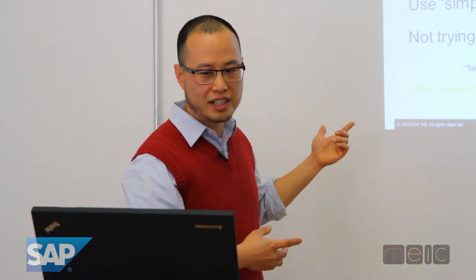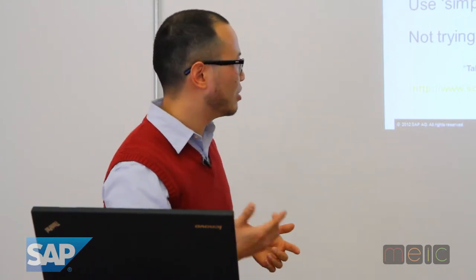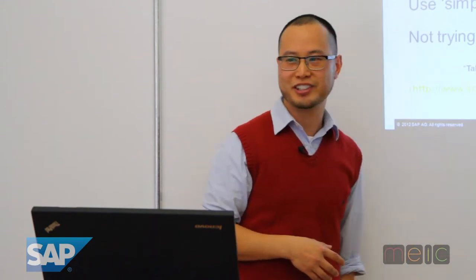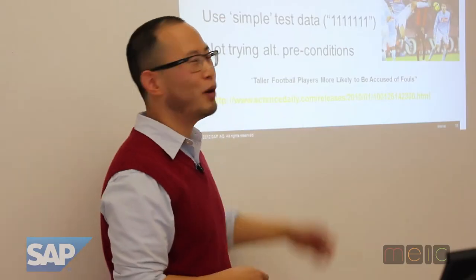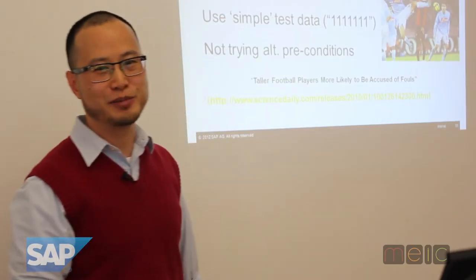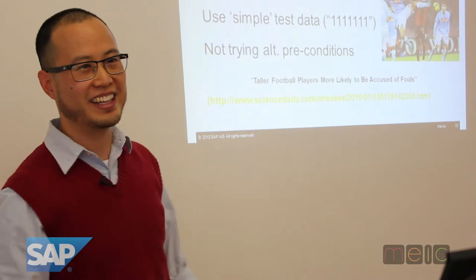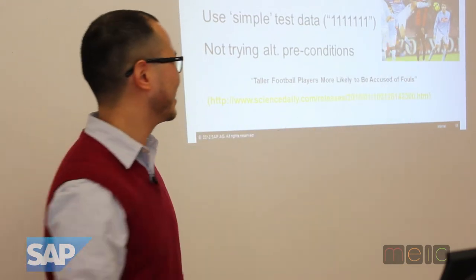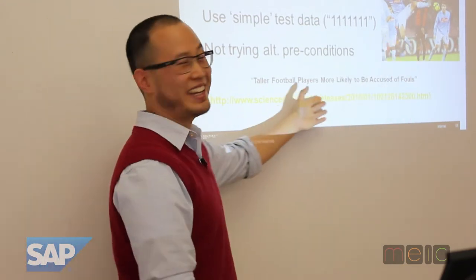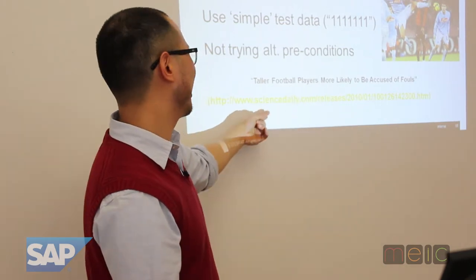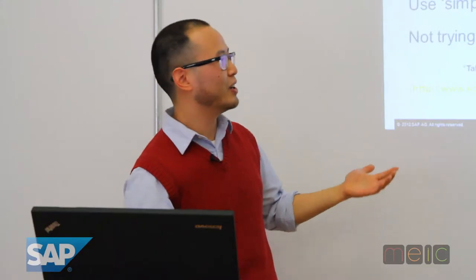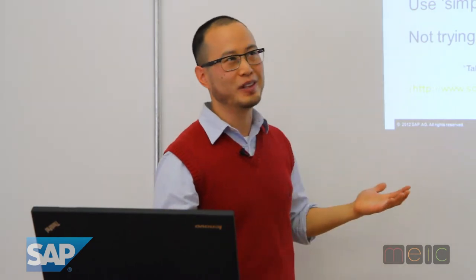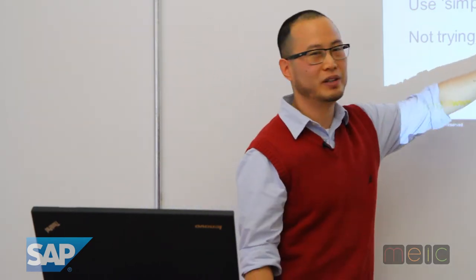Here's an example. They ran a study a couple of years ago and found that tall football players are more likely to be accused of fouls. The idea is the referee always picks on the little guy picking on David and Goliath type of thing. That study was quite interesting. And sometimes we use simplistic data.